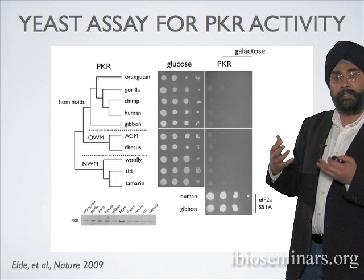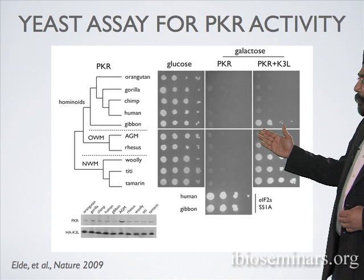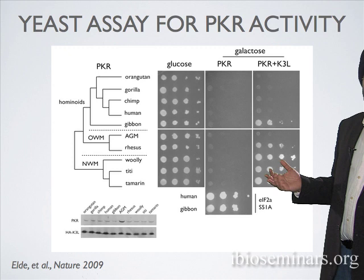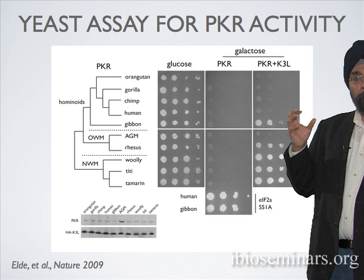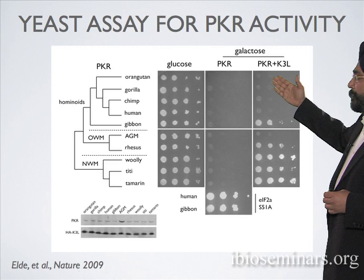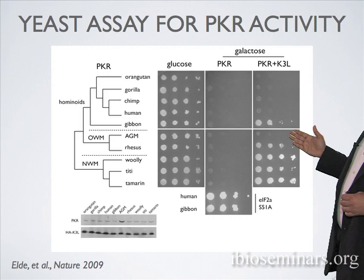The really interesting question is what happens when you introduce the viral antagonist K3L from vaccinia virus. We find a completely binary response. In some situations, like the gibbon PKR case, introduction of vaccinia K3L completely reverses the growth inhibition. Whereas in the human case, even the presence of K3L at roughly equal expression levels did not overcome the growth inhibition. This is exactly like that cartoon example of two states — an evolutionary snapshot where either the host is winning and growth inhibition continues, or the virus is winning and growth inhibition is completely reversed.